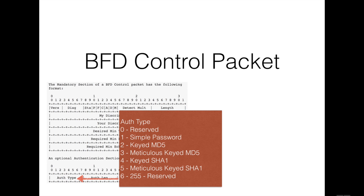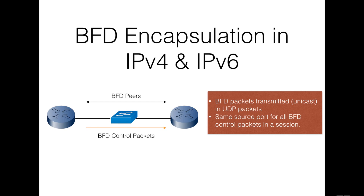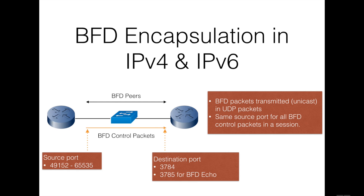The authentication type field, if the authentication present bit is set in the mandatory section, specifies the type of authentication in use. BFD control packets are transmitted in UDP packets when used within an IPv4 or IPv6 packet. All control packets used in a single session must be from the same source port, and security policies should permit BFD control packets for the session to be established. The source port number must be chosen from within the range of 49,152 to 65,535. The destination port for BFD control packets in asynchronous or demand mode is 3784, but when the BFD echo function is in use, the destination port number becomes 3785.